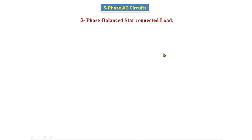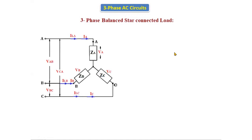If you see the star connected diagram, this is the star connected load circuit diagram. It is having three phases — phase A, phase B, phase C — connected in the form of a star. That's why it is called a star connected load. These are the impedances: ZA, ZB, ZC are the three impedances. ZA is the impedance of phase A, ZB is the phase B impedance, and ZC is the phase C impedance. ZA, ZB, ZC are equal in magnitude because it is a balanced load.